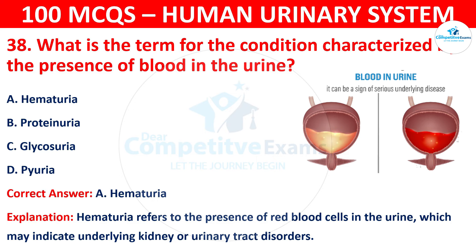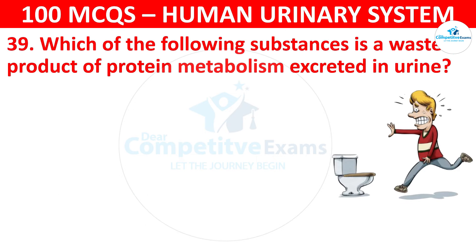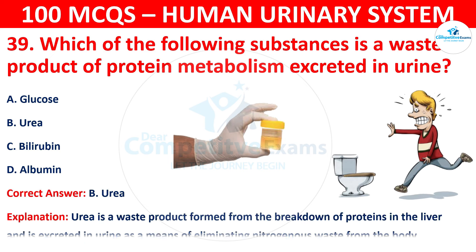Question 39: Which of the following substances is a waste product of protein metabolism excreted in urine? Your options are: glucose, urea, bilirubin, or albumin. The correct answer is B, that is urea. Urea is a waste product formed from the breakdown of proteins in the liver and excreted in urine as a means of eliminating nitrogenous waste from the body.